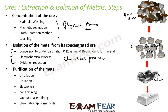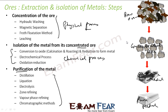Once we have the impure metal, we want to purify it to make it pure metal. To purify, we use various processes such as distillation, liquidation, electrolysis, zone refining, vapor phase refining, and chromatographic methods. All these methods are used for purification.